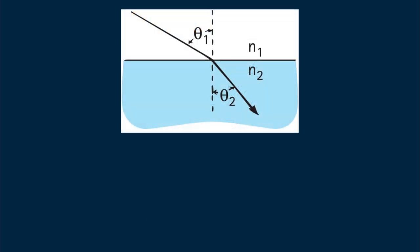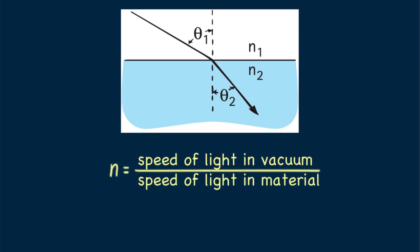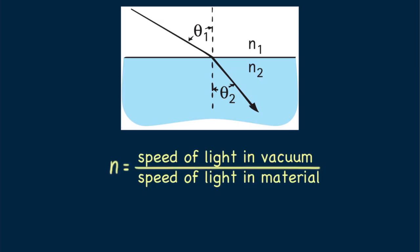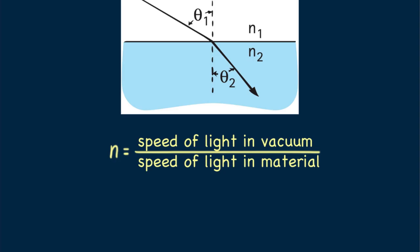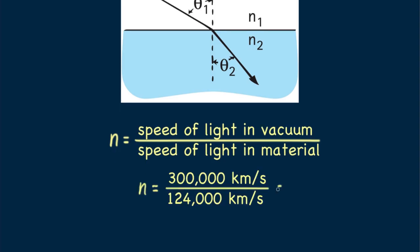Just how much the speed of light differs from its speed in a vacuum is given by the index of refraction, N, of the material. N is the ratio of the speed of light in a vacuum to its speed in the material. For example, the speed of light in a diamond is 124,000 kilometers per second, and so the index of refraction for diamond is 2.42. For a vacuum, N would be 1. In the same material, light of different frequencies has different speeds and different indices of refraction.